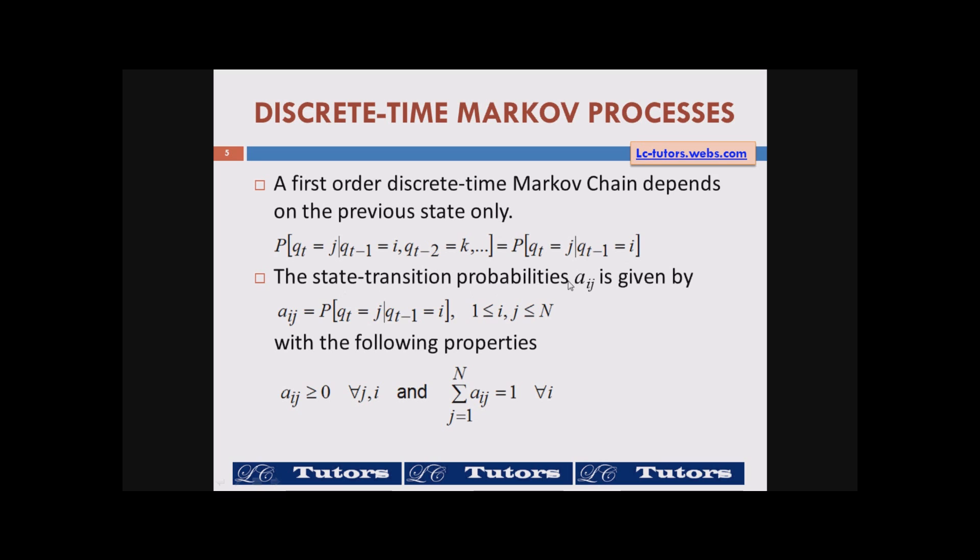The state transition probabilities aij is given by aij probability of qt given qt minus 1. qt is equal to j, qt minus 1 is equal to i for all i and j between 1 and n. With the following properties where for all i and j should be greater than 0 and for all i and j aij the transition probability is always positive. It is a probability and also if you sum up all the transition probabilities from 1 to n it should be equal to 1 for all the nodes in the Markov chain.